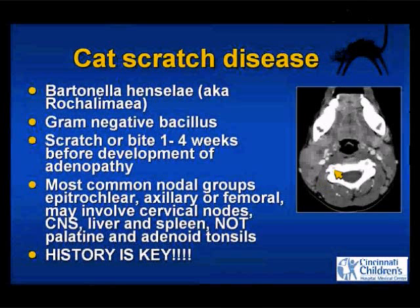Cat scratch disease — I mentioned it because a lot of people forget about it. We do see cervical adenopathy in these kids. The most likely place for kids to get nodal disease from cat scratch is epitrochlear — that's the classic — but also axillary, femoral, and cervical nodes. Another disease that can involve the CNS, liver, and spleen. Usually not palatine tonsil and adenoid because these are in areas of drainage from the original injury.